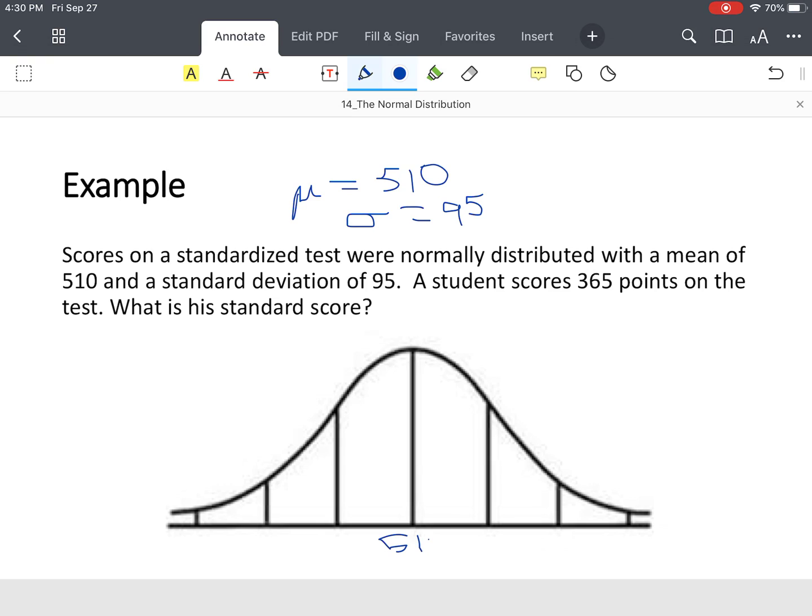So you build your curve. Your mean is 510, you add 95 for one standard deviation to get 605, then 700 for two standard deviations, and 795 for three standard deviations above. Below the mean, 510 minus 95 is 415, 415 minus 95 is 320, and 320 minus 95 is 225.